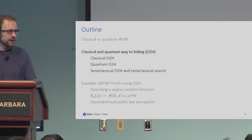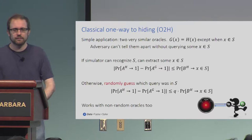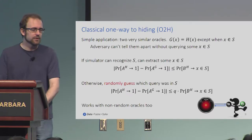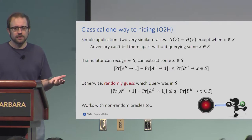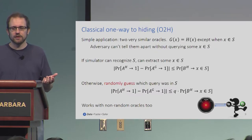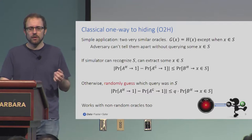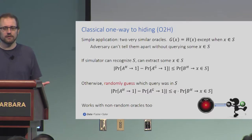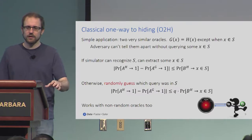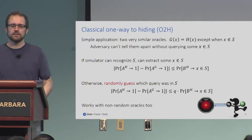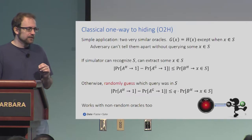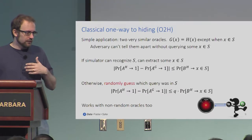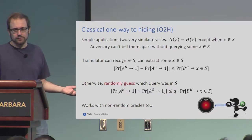Onward to one-way-to-hiding. The classic version of this idea is very simple. If you're doing a proof by a series of games, you're sort of cheating the adversary a little bit more in each game step. One way you might do that is by replacing the previous random oracle with a slightly different, possibly less random oracle. If you have two oracles — and actually they don't have to be random, they can be any oracles classically — that agree everywhere except on some possibly small set S, then an adversary can't tell them apart without querying an element of that set.